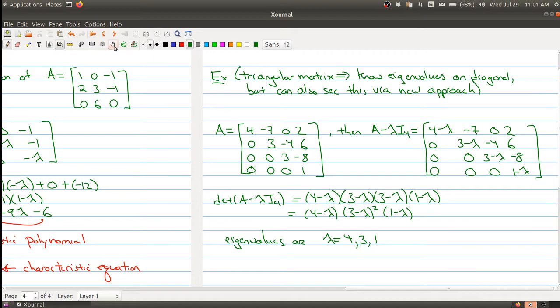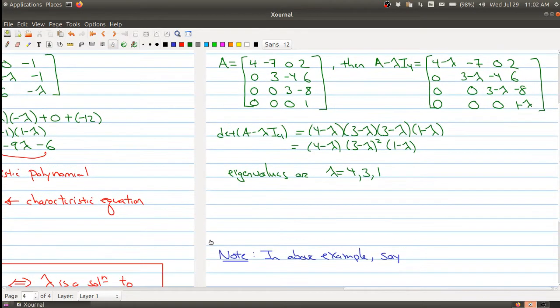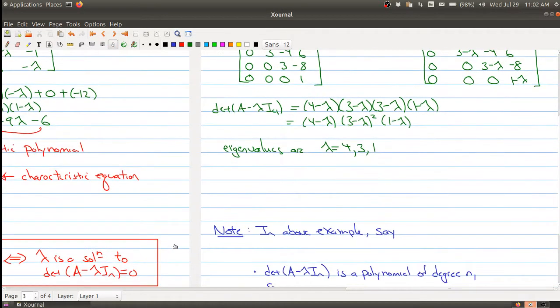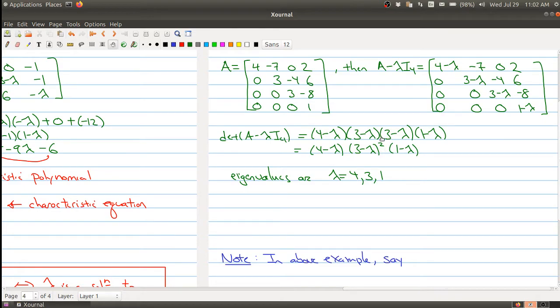Now one thing you want to kind of pay attention to, that in the above example, it really looks like you want to treat 3 as appearing twice, because it appears twice on the diagonal. It appears twice on the diagonal. And we're seeing the twice part here and the fact that you're squaring 3 minus lambda.